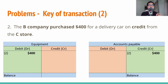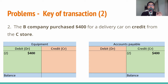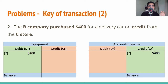Transaction two: B company purchased $400 for a delivery cart on credit from C Store. This transaction affects two accounts: the equipment account and accounts payable. The equipment account is money outflow because the company invests in it to generate future benefits. Accounts payable is money inflow because instead of purchasing by cash, the company purchased on credit — so that money is essentially a loan. Final answer: the equipment account is debited by $400 and accounts payable is credited by $400.